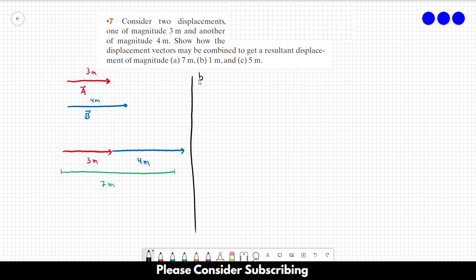For letter B, you want 1 meter, so you have to go to the right with vector B and to the left with vector A. The resultant is this vector, which has a magnitude of only 1 meter. You have to align them antiparallel.